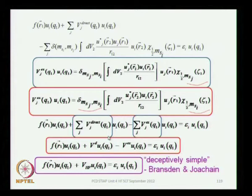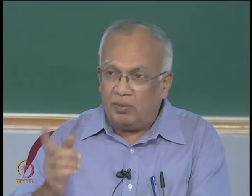In this form the Hartree-Fock equation looks like an eigenvalue equation — an operator acting on a function giving a scalar times the same function. Bransden and Joachim describe it as a 'deceptively simple form': it looks like an eigenvalue equation, but it is not. The reason it is not an eigenvalue equation is because of the exchange term, which is a global term.